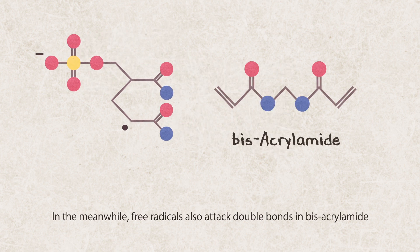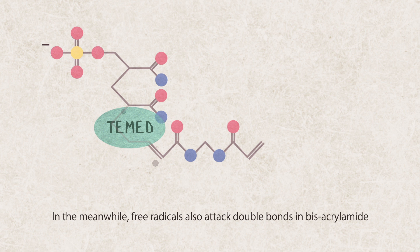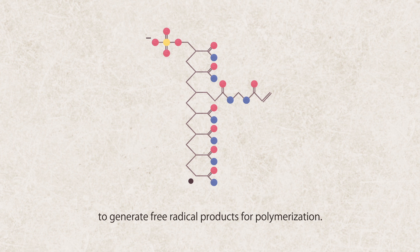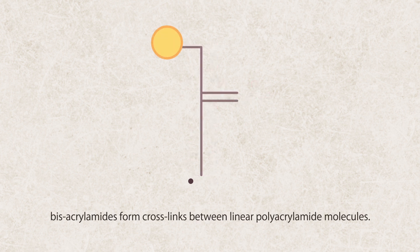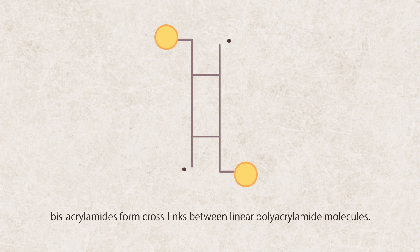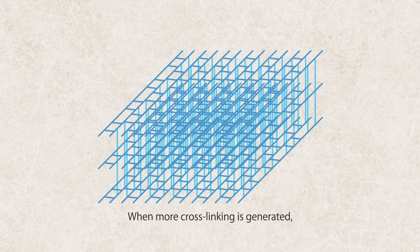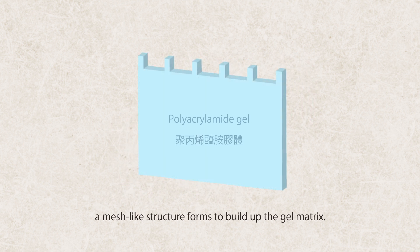In the meanwhile, free radicals also attack double bonds in bisacrylamide to generate free radical products for polymerization. Acting as a bridge, bisacrylamides form cross-links between linear polyacrylamide molecules. When more cross-linking is generated, a mesh-like structure forms to build up the gel matrix.